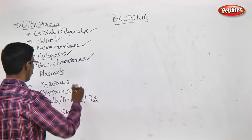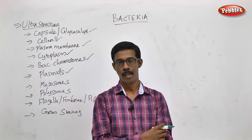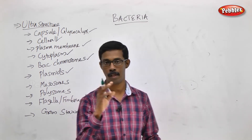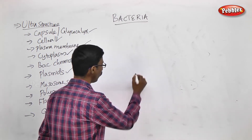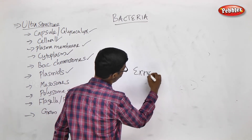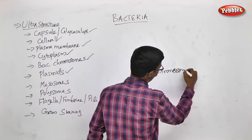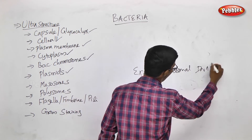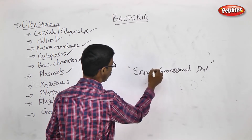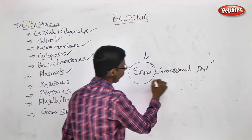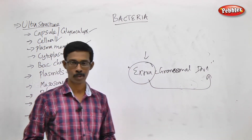Now we will see the next heading: Plasmid, Bacterial Plasmid. This is not bacteria — there are some extra-chromosomal DNA. What is that? There are some extra DNA molecules present in particular bacteria; they are all called Plasmids.